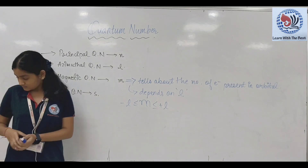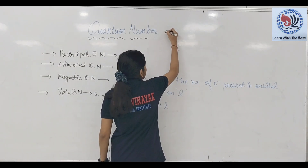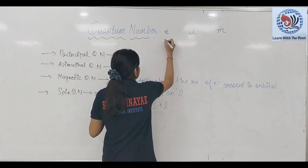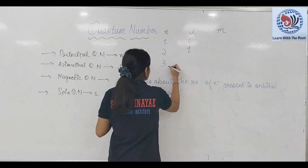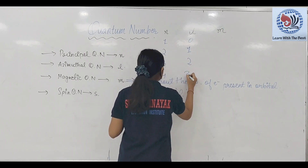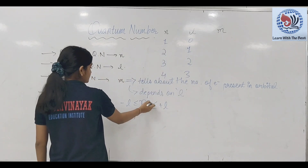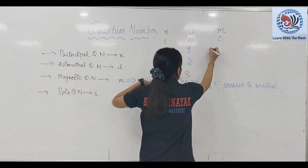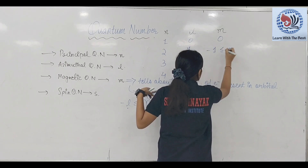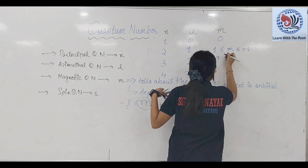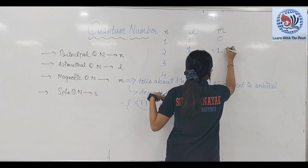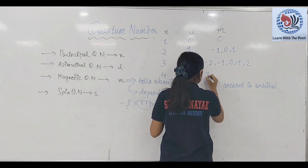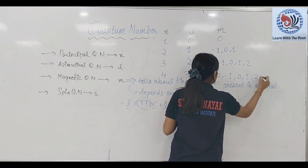एक chart बनाया था — N, L, M। N की value 1 तो L की value 0, N=2 तो L=1, N=3 तो L=2, N=4 तो L=3। M की values: L=0 है तो M=0; L=1 है तो M = -1, 0, +1; L=2 है तो M = -2, -1, 0, +1, +2; L=3 है तो M = -3, -2, -1, 0, +1, +2, +3।